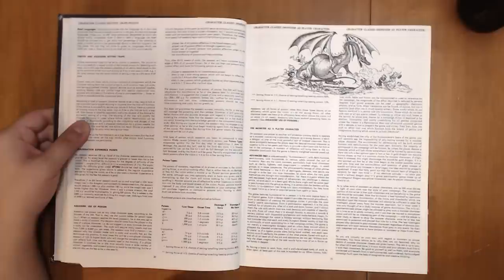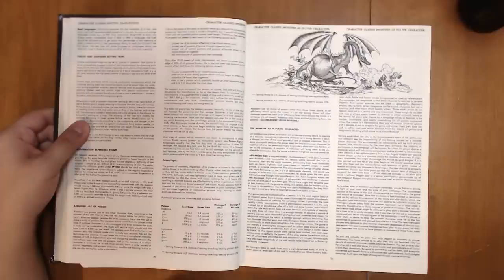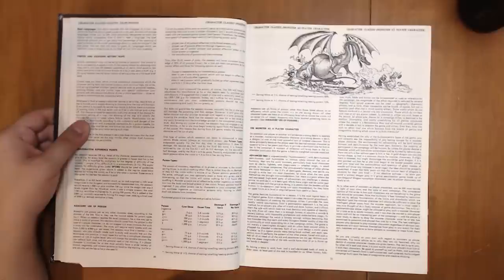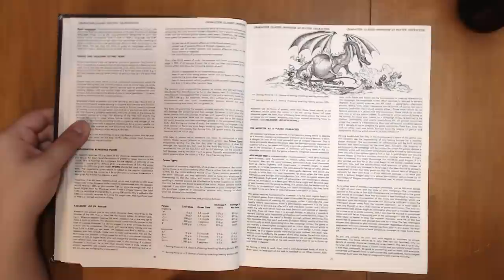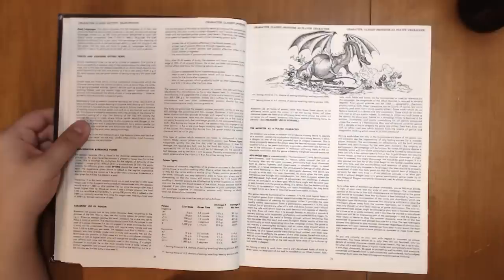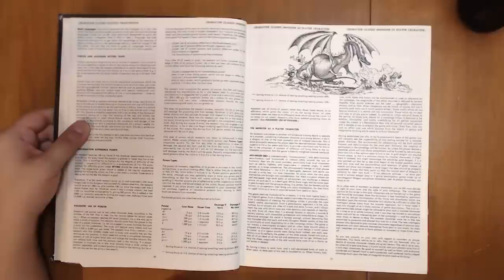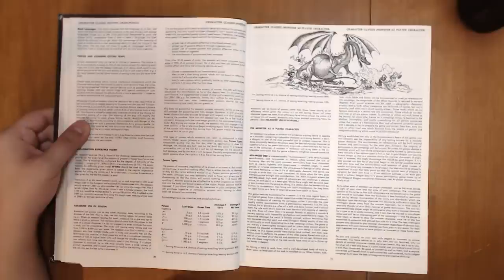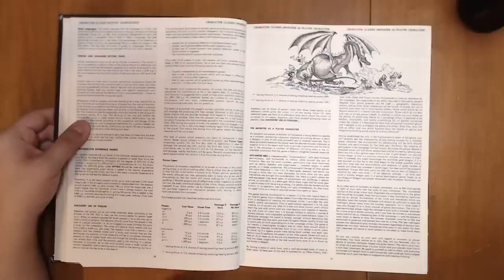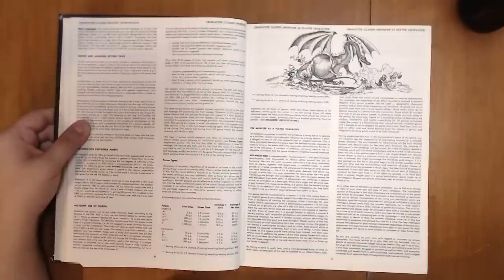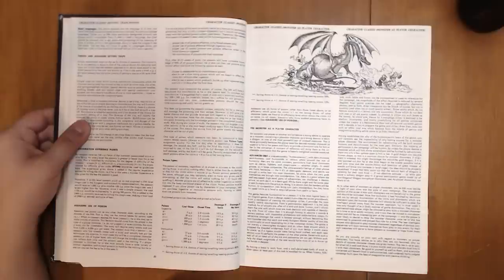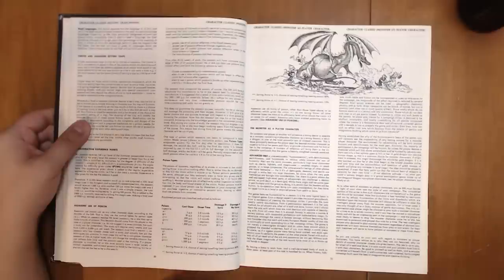Poison types. The poison of monsters, regardless of its pluses or minuses to the victim's saving throw, is an all or nothing affair. That is, either they do no damage, or they kill the victim within a minute or so. Poison potions generally do the same, although you may optionally elect to have any given one be slow acting. Monster poisons are all effective by either ingestion or insinuation into the body and bloodstream of the victim. If you allow poison use by characters in your campaign, users can purchase ingestive or insinuative poisons only, having to obtain dual-use poisons from monsters.